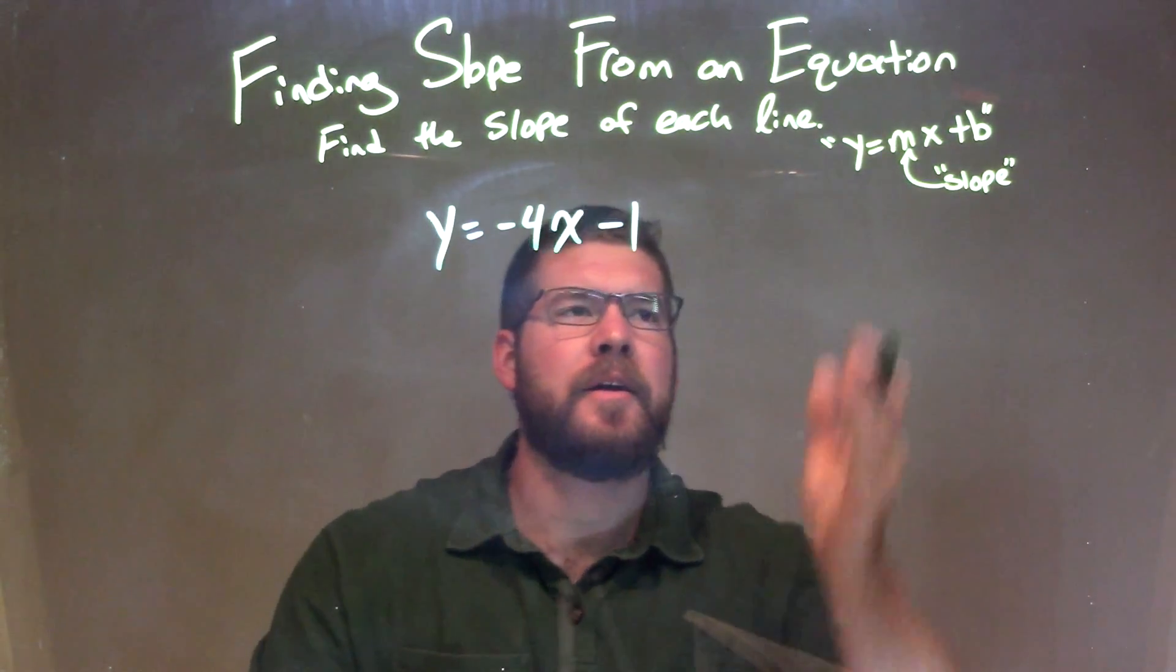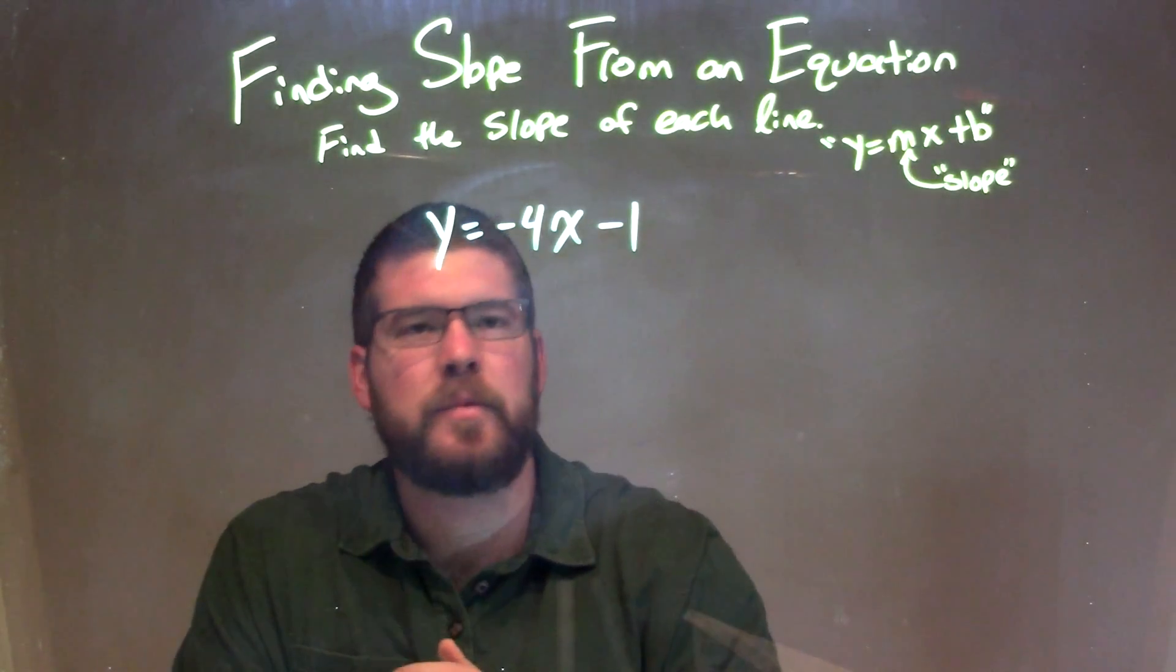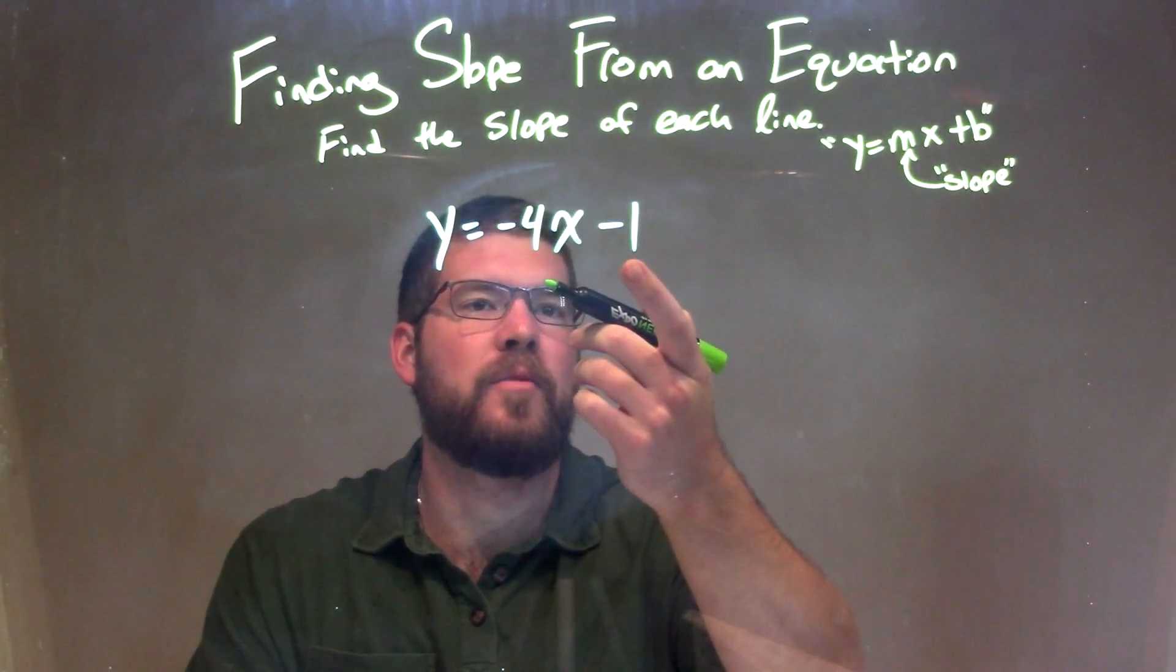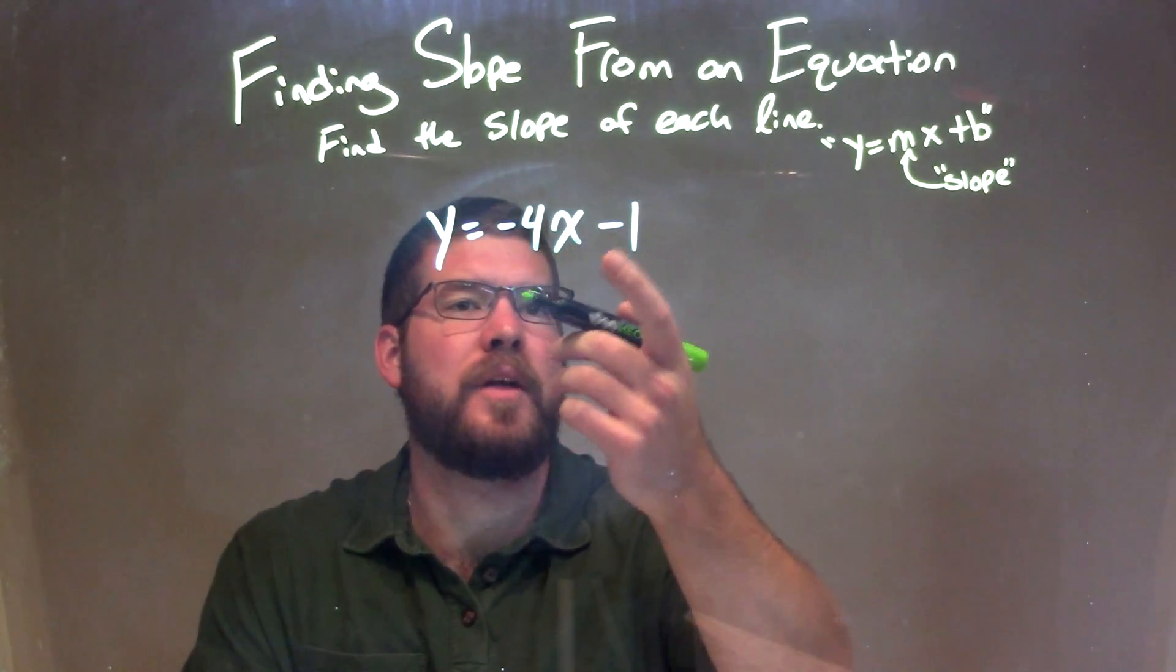Well, we notice that it's already in our slope-intercept form. We don't need to simplify it anymore. So we have y equals negative 4x minus 1, and it matches y equals mx plus b.